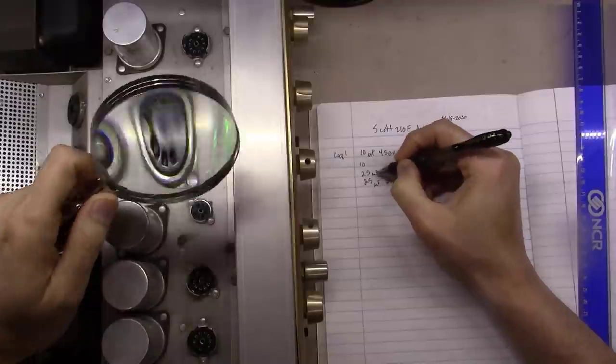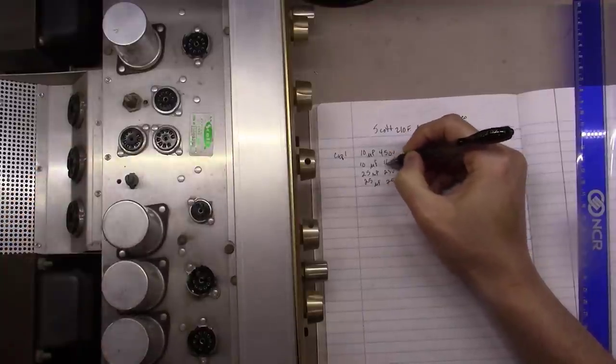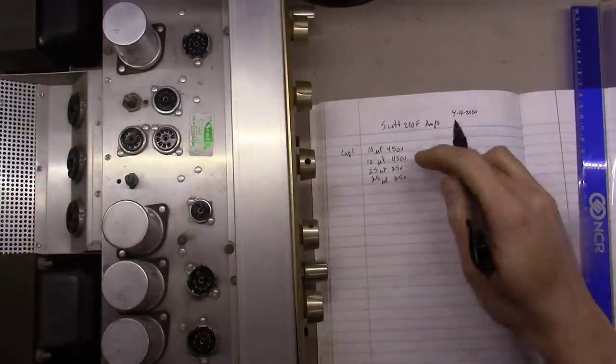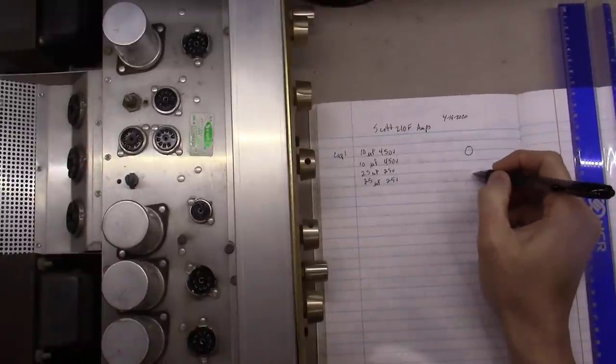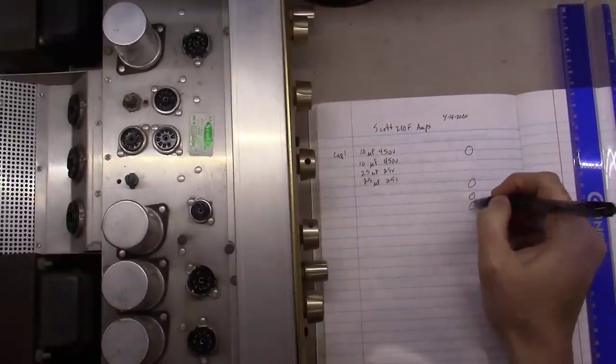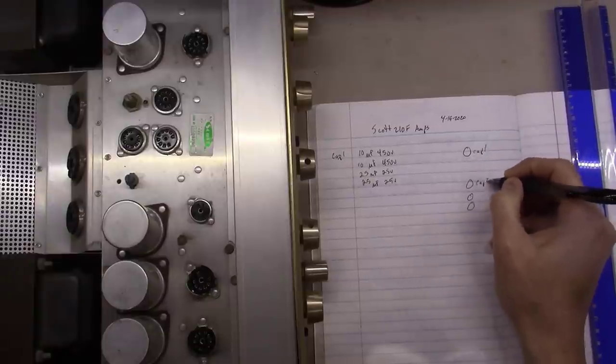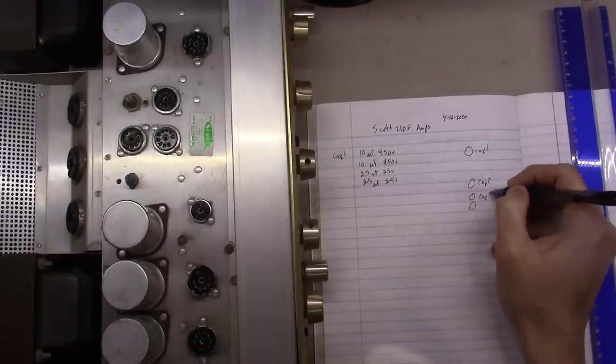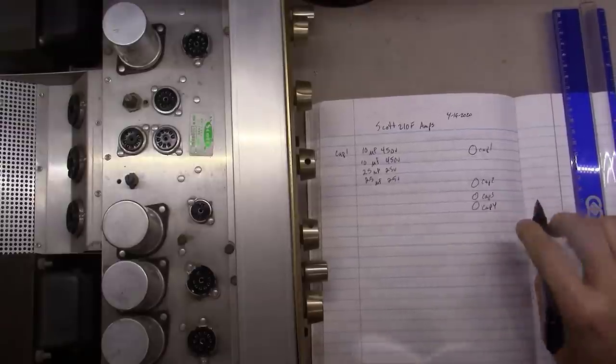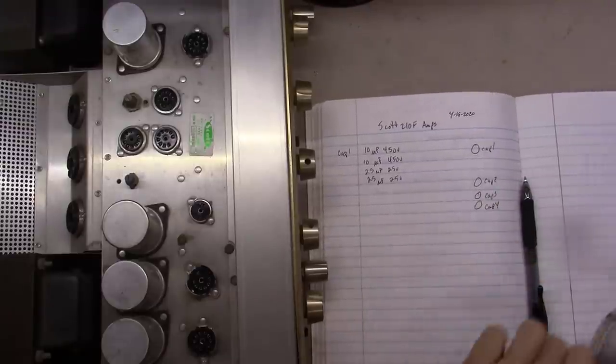So I'll just go through and do that for each one of these caps. And I'll probably just do a little diagram drawing over here on the side, and I'll label them like cap one, cap two, cap three, four. All right, so we'll get all those laid out here for you.